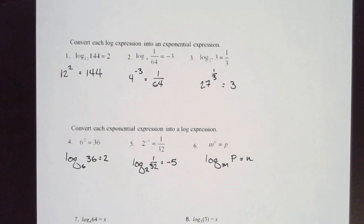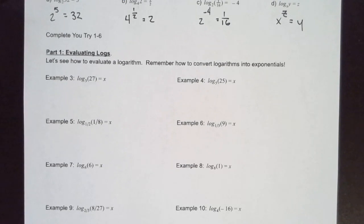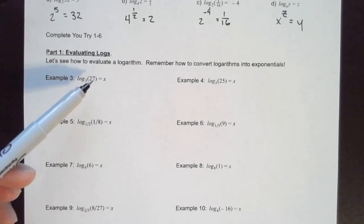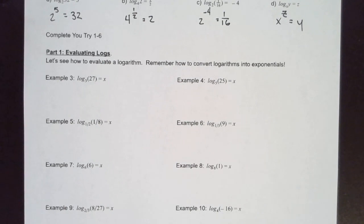Now we're going to actually evaluate some logs, and we're going to do these by hand. So here we have 3 raised to some exponent that we don't know, and that's going to equal 27. It's probably helpful to write this in exponential form so we're clear on what it means, since we're probably not very familiar with this log form yet.